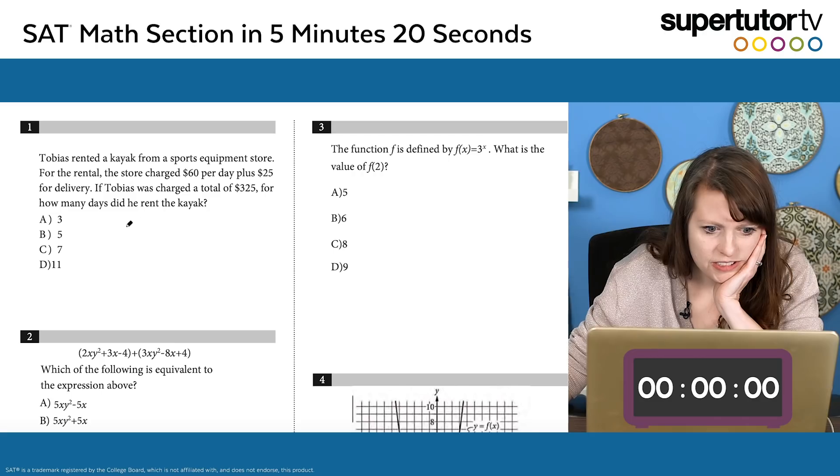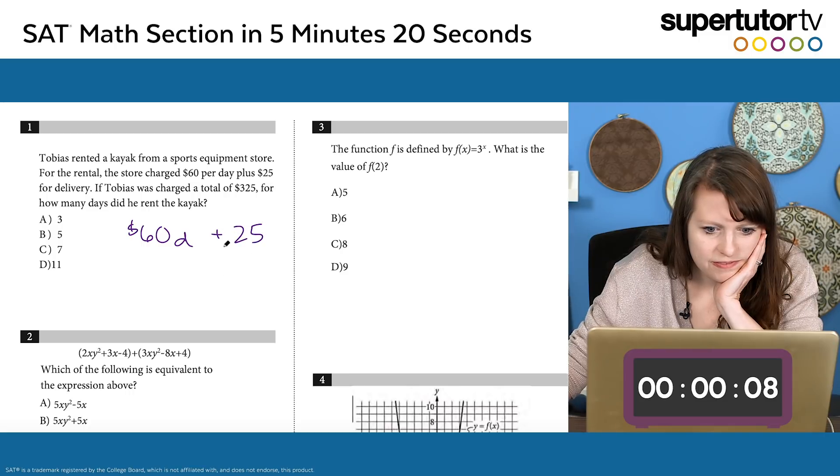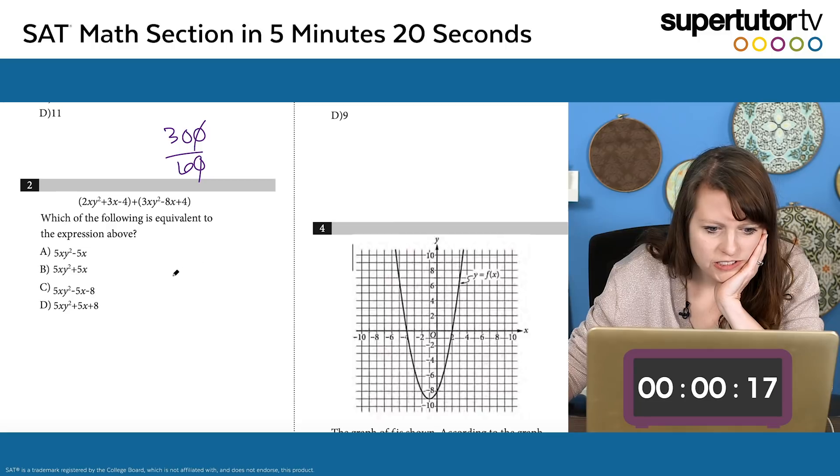So here we are, I'm starting at zero. On your mark, get set, let's go! Okay, so here as I kind of skim through this, I see that this is a classic word problem. We have $60 per day. Whenever I have per, I think that's probably the rate or the m in the mx plus b form. 25 is going to be the fixed amount, so I'm going to go 60d plus 25. And that's going to be the expression. 325 is what it equals, but minus 25 is 300, divide by 60, I get 5.